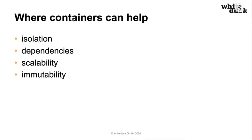And the last benefit: immutable containers. Immutable containers means — and this is related to the container image — that every instance we start will look the same. A container image is basically a template we create container instances from, and it always looks the same. If we start ten instances, all ten containers will look the same. These are the main reasons why we should choose containers and love containerized microservice applications.